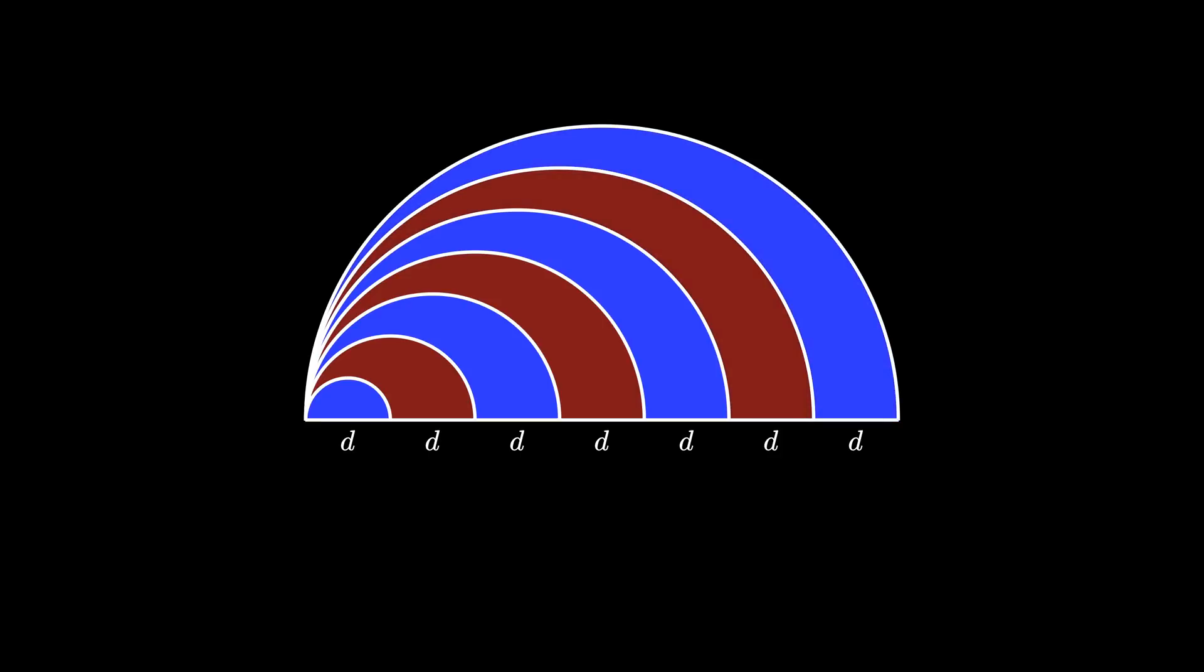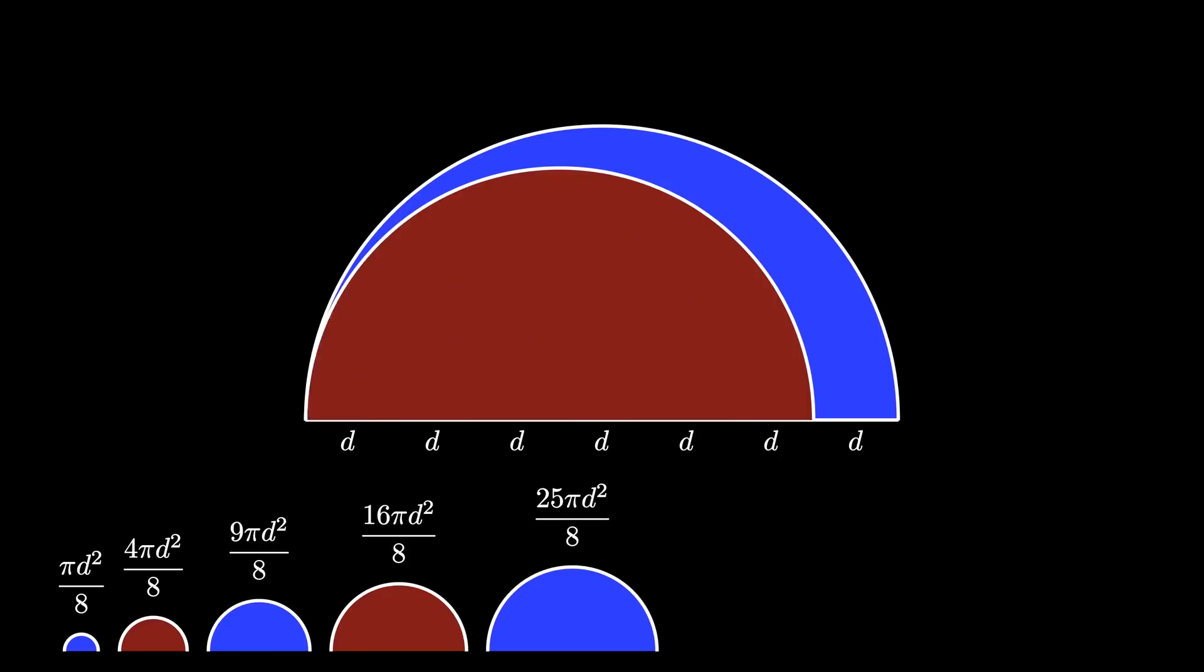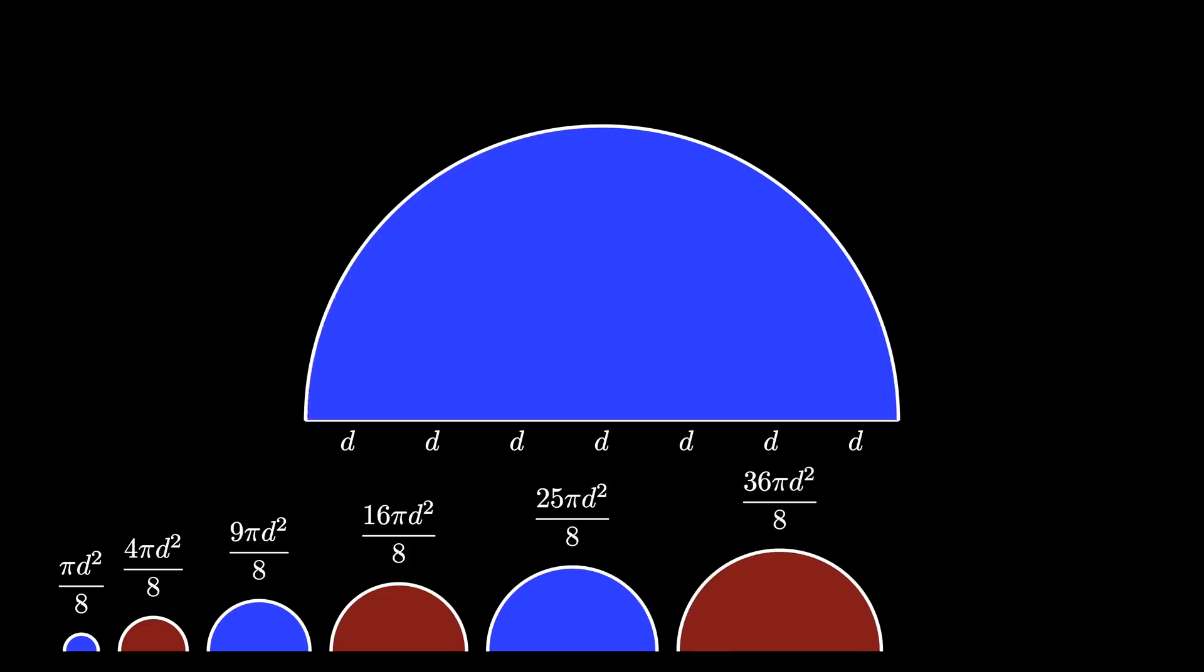Let's compute the area of the semicircles first. The first semicircle has area π d² over 8, the second one is 4π d² over 8, then 9π d² over 8, and so on. Each time, we have the nth square times π d² over 8.